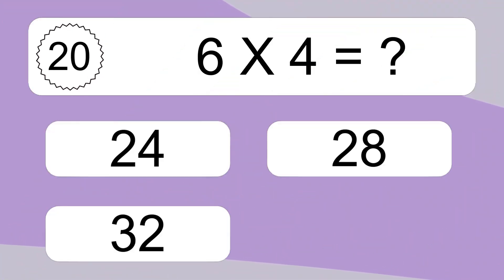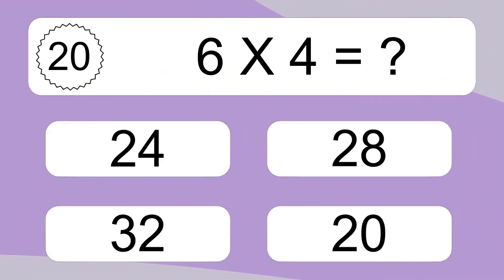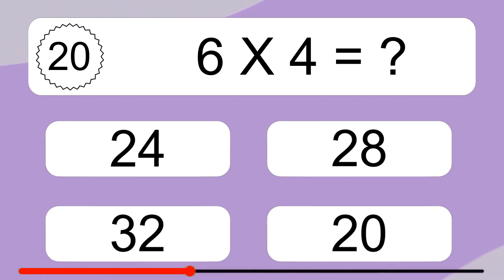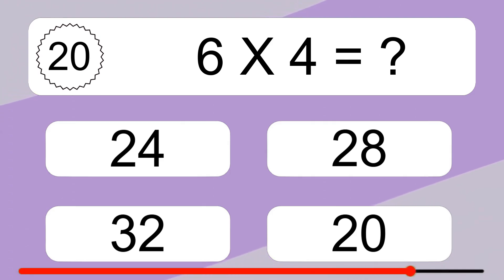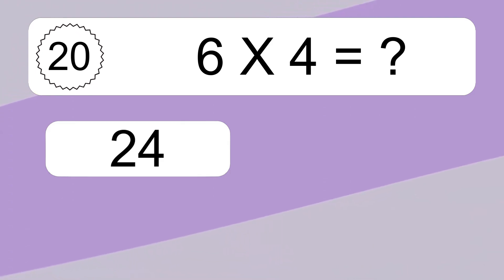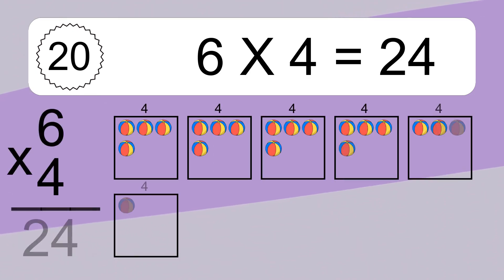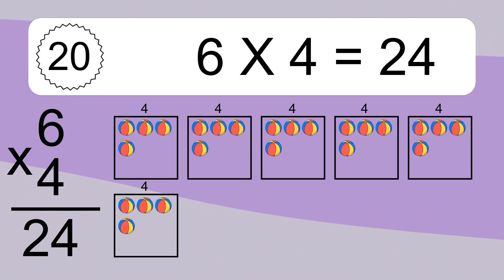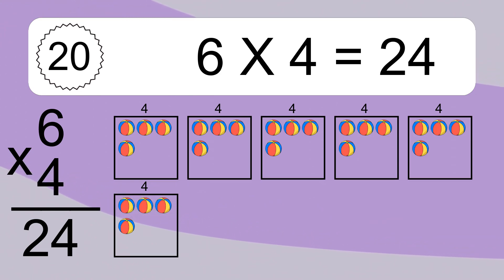6 times 4 equals 24. We have 6 boxes and each box has 4 colorful balls inside. If you count all the balls in all the boxes together, you will have 6 times 4 balls. This equals 24 balls.